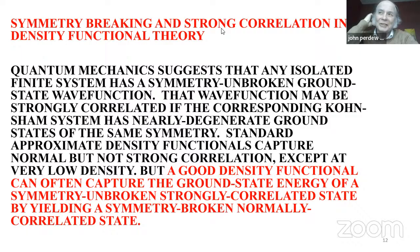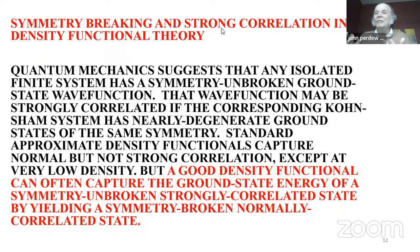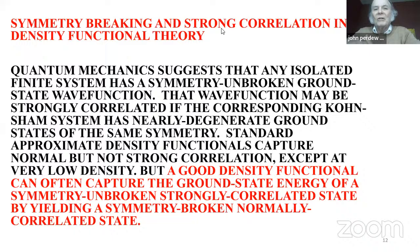The second part of the research talk concerns symmetry breaking and strong correlation in DFT, a subject Perdew has been interested in since the 1970s. Quantum mechanics suggests that any isolated finite system has a symmetry-unbroken ground-state wave function — you can simultaneously diagonalize the Hamiltonian and symmetry operators that commute with it. That symmetry-unbroken wave function could be strongly correlated if the corresponding Kohn-Sham system has nearly degenerate ground states of the same symmetry, because many different Kohn-Sham configurations can then be strongly mixed by a relatively weak electron-electron interaction. Standard DFT approximations capture normal correlation but not strong correlation.